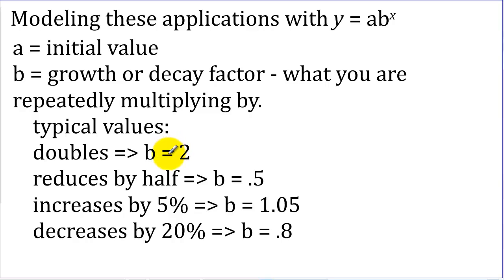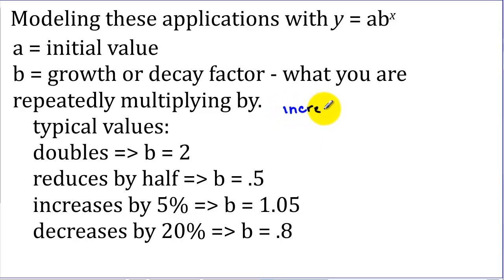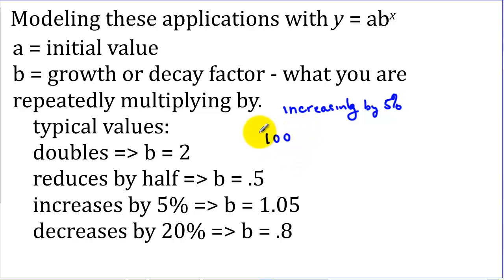When talking about radioactivity, we talk about a half-life — the amount of radioactive material decreases by half over a certain period of time, so b will be 0.5. Frequently we use percentages, like prices might increase by 5% per year, or investments give a return of 5% per year. What we're trying to find is a multiplier. If we had $100 and increase it by 5%, we take 0.05 times 100 to get $5, but we now have the original $100 plus $5.